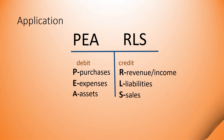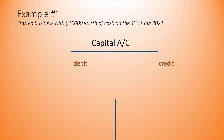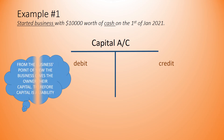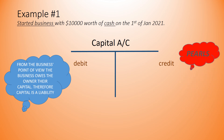Let us determine the nature of the capital account in this transaction. From the business's point of view, the business owes the owner their capital. Therefore, capital is a liability. Liabilities have credit balances according to the PROLs rule, hence we credit the capital account.